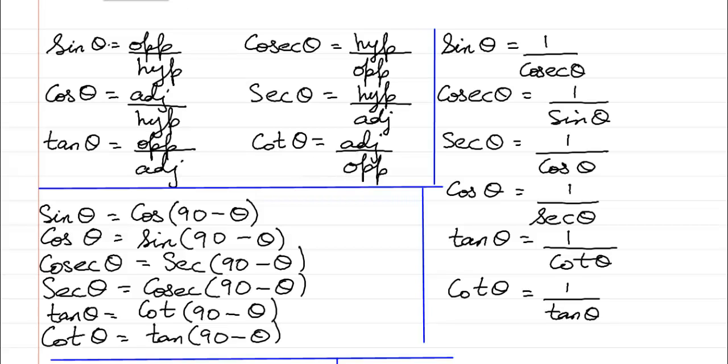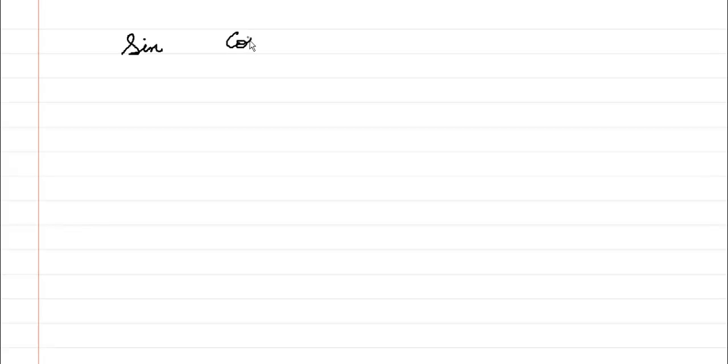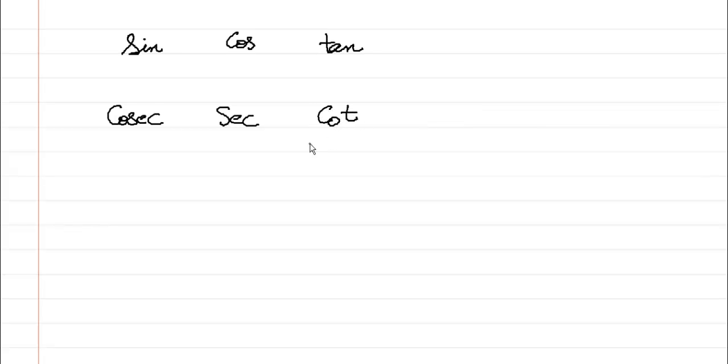Let's see how to learn these beginning formulas. First of all, I want you to understand that there are three basic trigonometric identities or functions: sine, cosine (which is also written as cos), and tan (which is also called tangent). Then we have cosec, then we have sec, and we have cot.